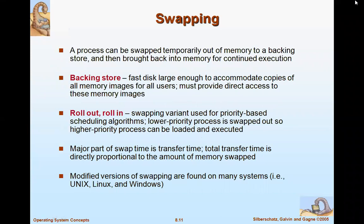Swapping is temporarily moving some processes from primary memory to some other storage, called a backing store. The process is moved out temporarily and brought back when needed for continued execution. This variant is used for priority-based scheduling algorithms.